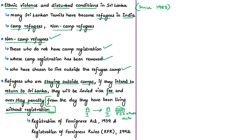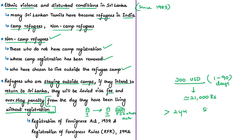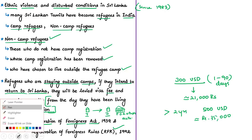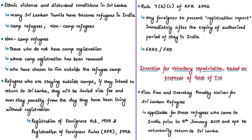A common concern is that many non-camp refugees, while shifting their residence, may not register themselves with the local police station or appropriate authority as required under the law. When they intend to go back to Sri Lanka, for the period they lived without registration, they are levied a visa fee and overstay penalty. According to the Government of India, the financial penalty is 300 US dollars (around ₹21,000) if the overstay is even one day or up to 90 days. If the overstay is more than two years, the penalty is 500 US dollars (around ₹35,000). This registration is governed by the Registration of Foreigners Act, 1939 and Registration of Foreigners Rules, 1992.